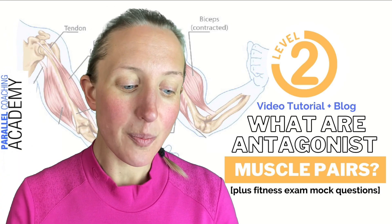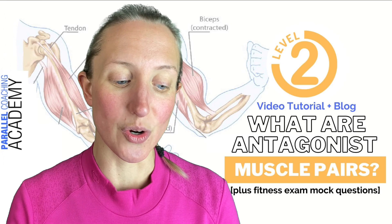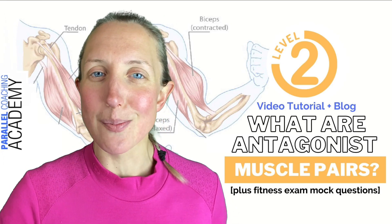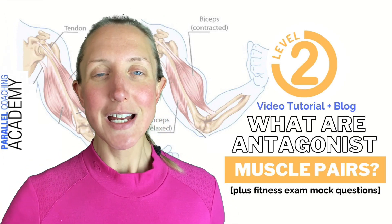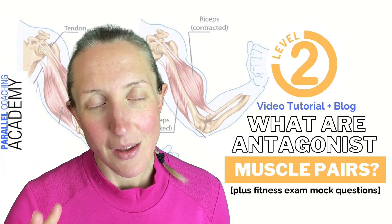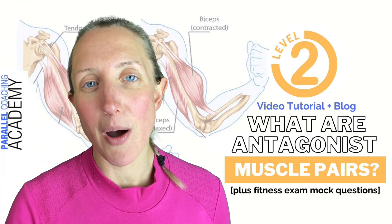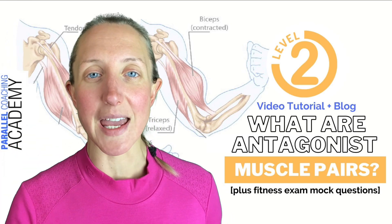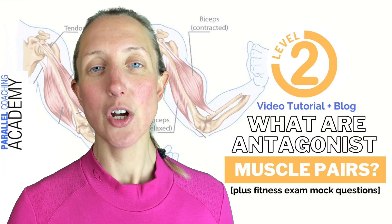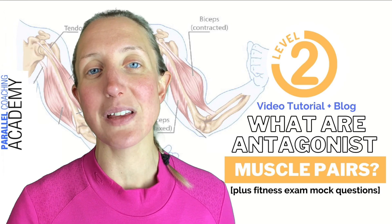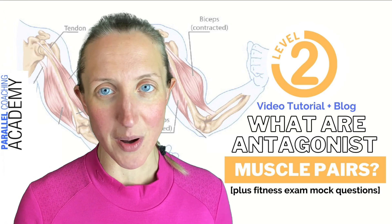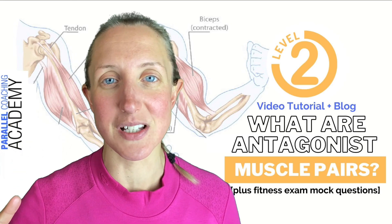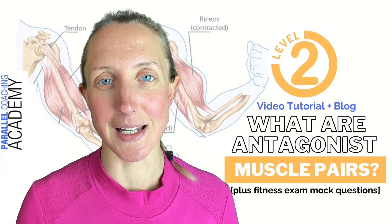The final pair is the rectus abdominis — your six-pack muscles at the front — which work with spinal flexion. The opposing muscle creates spinal extension, which is going to be the erector spinae, creating that back extension position.